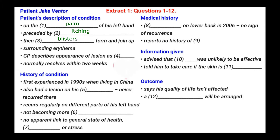The next question is: GP describes appearance of lesion as blank. We can assume it's some sort of adjective describing the appearance. The patient says it all feels a bit hot and the skin around it goes red, and when he showed it to the doctor, she used the word chaotic to describe it. So the answer to number four is: GP describes appearance of lesion as chaotic.